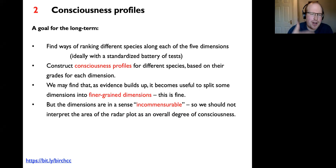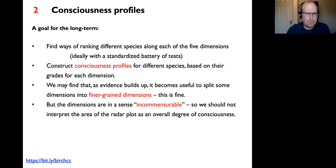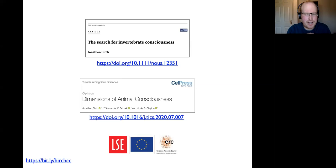To summarize: two ideas to help with two foundational questions. For what the theoretical commitments of animal consciousness research should be: let's not commit to a specific theory, but commit to the facilitation hypothesis. For whether we should rank animals as more conscious than others: no—instead we should construct consciousness profiles reflecting many different dimensions of variation. There's clearly a lot of work to do to pursue these programs over the long term.